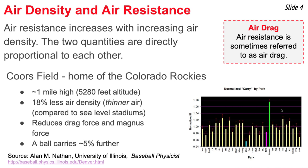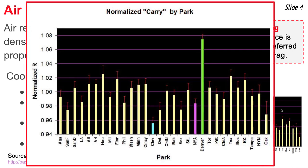This graph was prepared by baseball physicist Alan Nathan, and it shows in green the relative carry of a ball in Denver's Coors Field compared to other Major League Baseball stadiums.